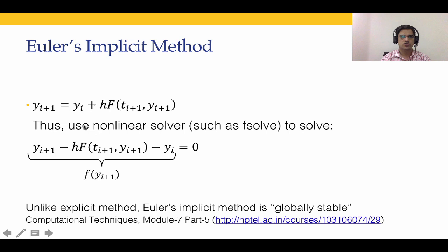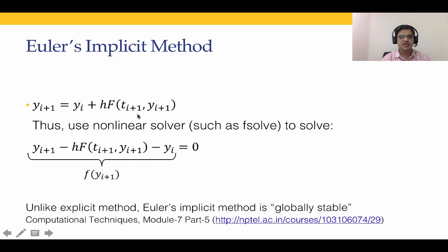In Euler's implicit method, y(i+1) depends on itself through the function f, making it a nonlinear equation that must be solved. We can do this using a nonlinear solver such as fsolve, which was covered in module 5. The equation is rewritten as: y(i+1) − h × f(t(i+1), y(i+1)) − y(i) = 0, which we pass to fsolve.